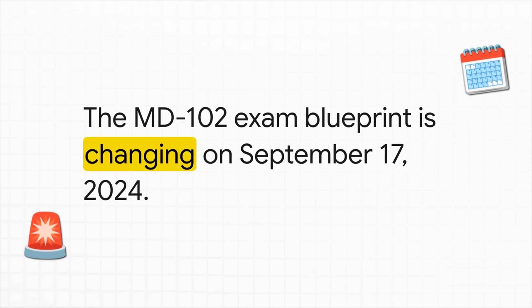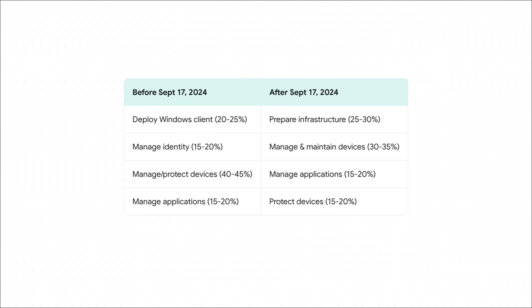Microsoft is changing the exam. If you're planning to take it on or after September 17th, 2024, that blueprint we just looked at is changing. Here is the side-by-side comparison — on the left you see the current structure, on the right the new one. They're taking those old sections on deploying Windows and managing identity and combining them into a brand new heavy-hitting section called Prepare Infrastructure. And the huge device management part is being split into two more focused areas: one for Manage and Maintain, and another for Protect. It's a pretty big restructure, but it actually makes a lot more sense — it follows a logical flow from getting your infrastructure ready all the way to locking down the devices that run on it.